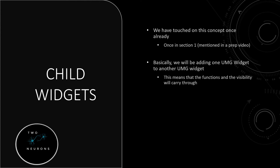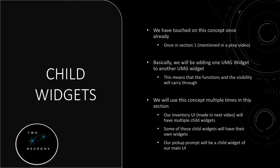This means our main inventory UI will be able to see the functions and variables of our inventory slot. We'll use this concept throughout the section when creating our menus. Our inventory UI made in the next video will have multiple child widgets. Some of these children widgets will have their own children widgets. Our pickup prompt will also be a child widget, but not of our main inventory UI — rather our main UI overall. Just like adding a custom primitive component, this is aimed at reducing the amount of work we have to do, avoiding replication of efforts.